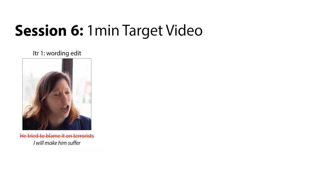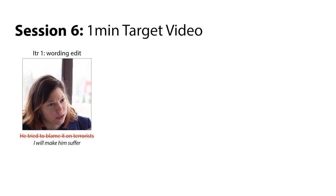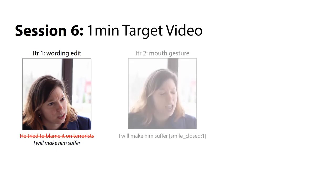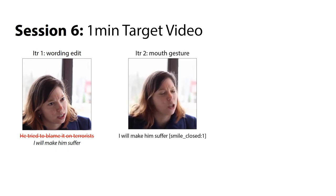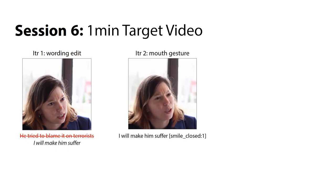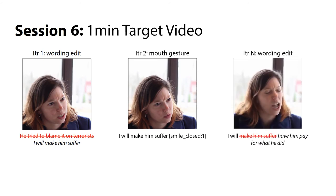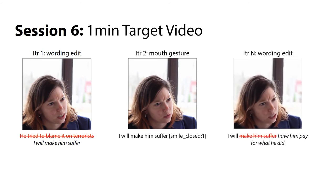With a mere one-minute take as target video, our tool can still help the editor explore alternative lines. We first try the line: 'I will make him suffer.' For more creepiness, we add a closed-mouth smile at the end: 'I will make him suffer.' After a few iterations, we settle on a different, less hostile line: 'I will have him pay for what he did.'